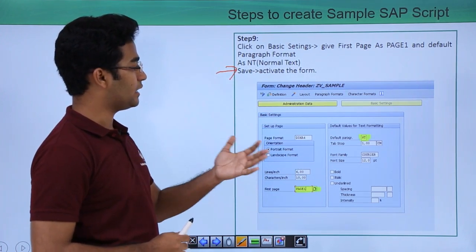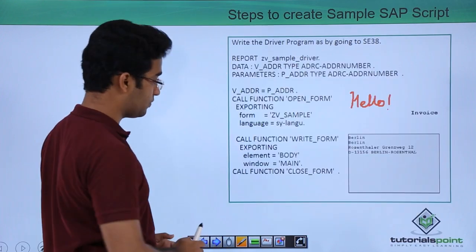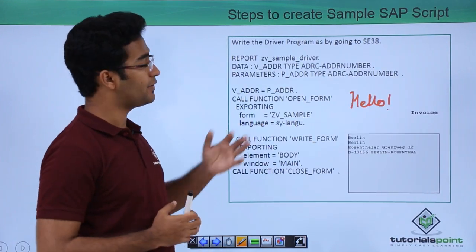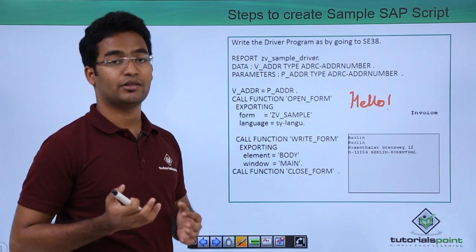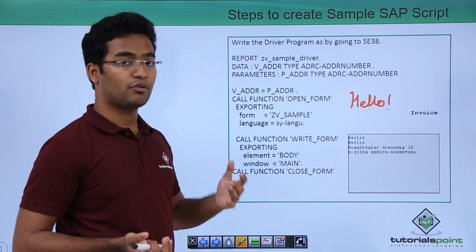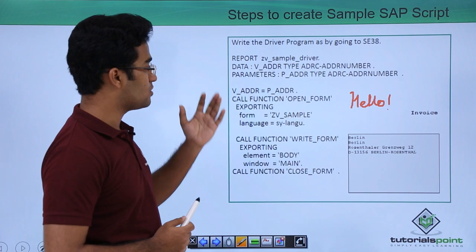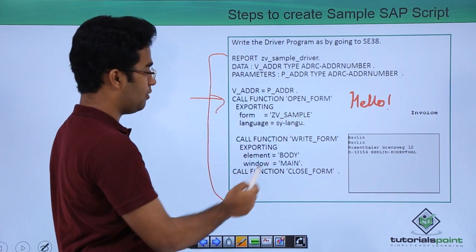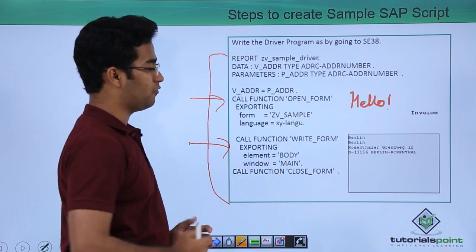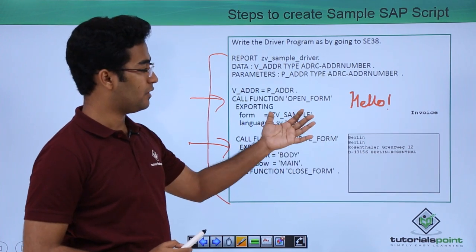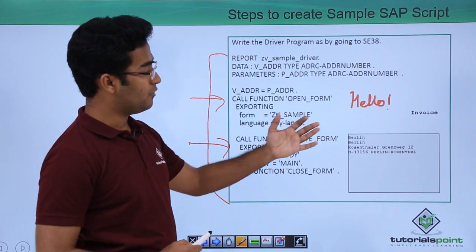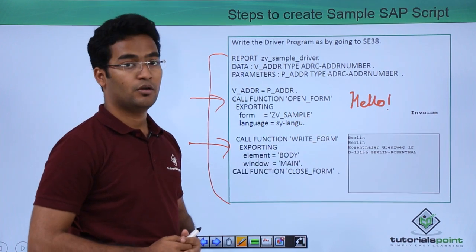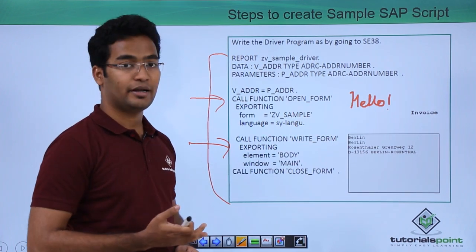We click on save and activate the form. Then at the last step we write our driver program. We have created our SAP script, and to run it we write a driver program. This is a sample program where we call function open_form and function write_form. When we execute this program, our SAP script output will come. Now let us see all these steps in detail practically.